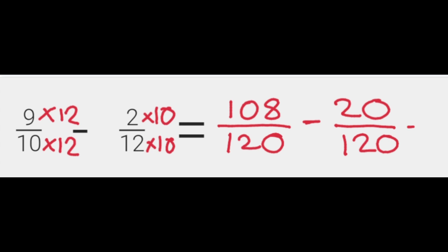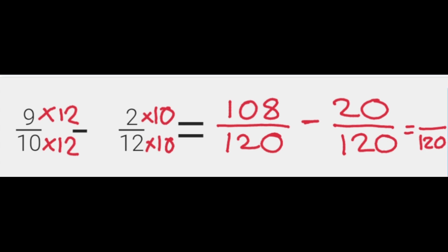Take away 2 times 10 which is 20, and 12 times 10 is 120. Same same stays the same. Now 108 take away 20 — we're going to subtract straight across the top — gives us 88. So our answer is 88 over 120, and of course it's quite a large fraction, so you can simplify that further.